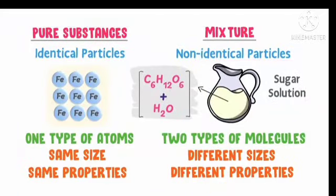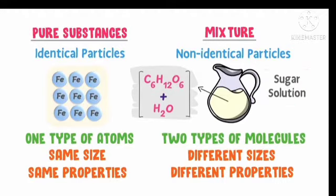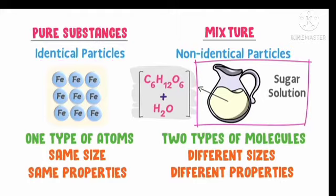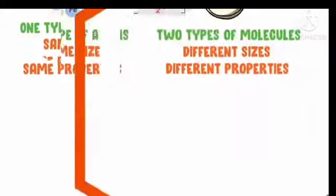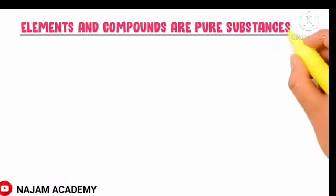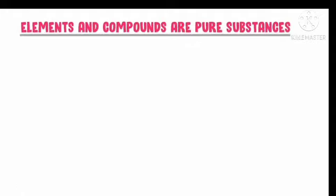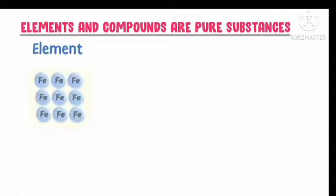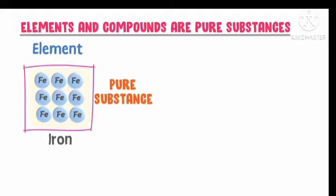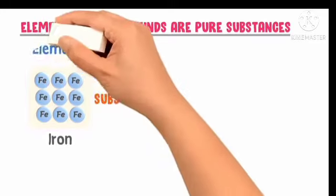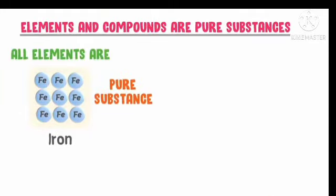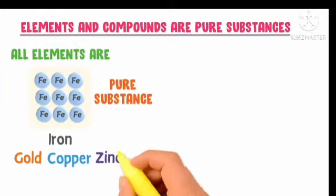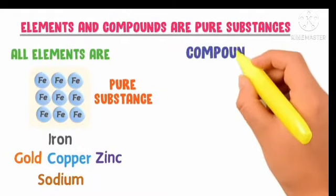Now we will discuss about mixtures. Here, sugar solution type — solutions are all made up of different sizes and different properties of molecules; that is called a mixture. Pure substances mean same type of identical particles. Why are elements and compounds called pure substances? We know that an element has the same type of particles — iron has same type of particles, that is a pure substance, with same size molecules, same size and same properties. All elements are pure substances.